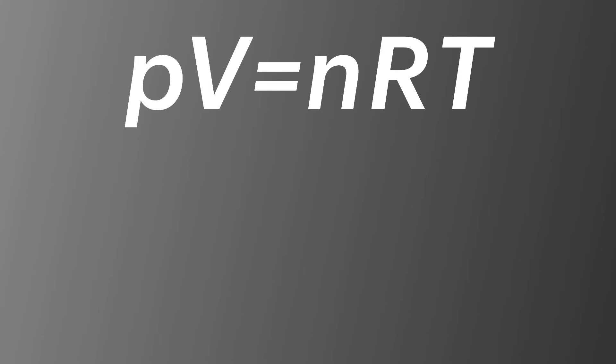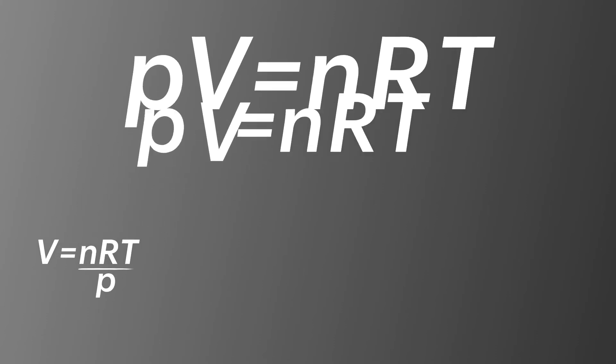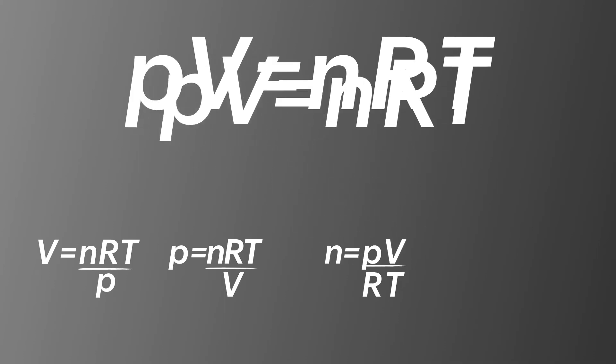Rearranging the PV equals nRT equation can be quite tricky. We need to be able to confidently rearrange it to get volume, pressure, number of moles, and temperature.